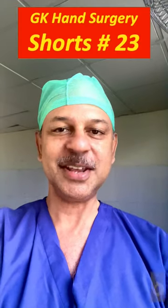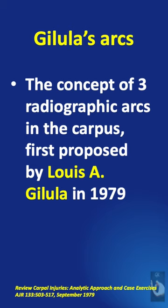Learning hand surgery one point at a time. The concept of three radiographic arcs in the carpus was first proposed by Gillula in 1979.